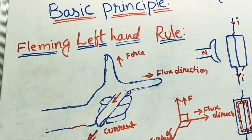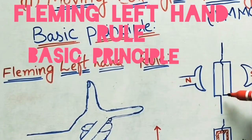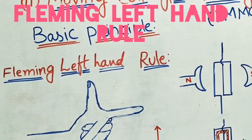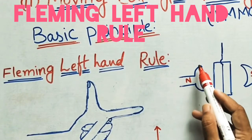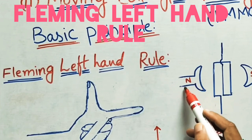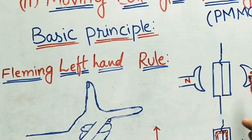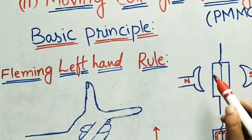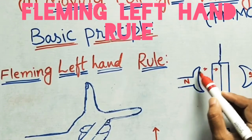Here we are taking an electric coil in a rectangular shape. This coil is kept in a magnetic field. We are taking north pole and south pole magnets. As we know, when you place magnets, a magnetic field develops from north to south.